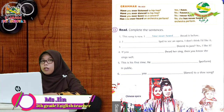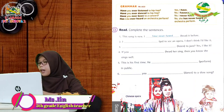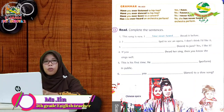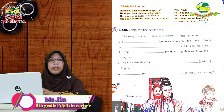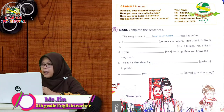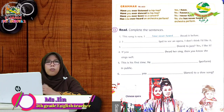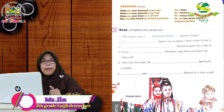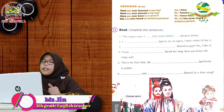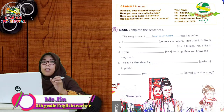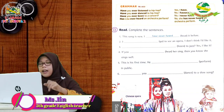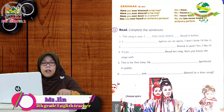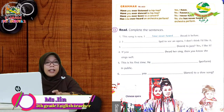Number one: 'This song is new.' Kata dalam kurung adalah 'hear' — kata ketiganya adalah 'heard'. Kalau lagunya baru, mungkin kita belum pernah dengar sebelumnya, jadi jawabannya adalah never. Subjeknya adalah I, so I menggunakan have. Jawaban: 'I have never heard it before.'